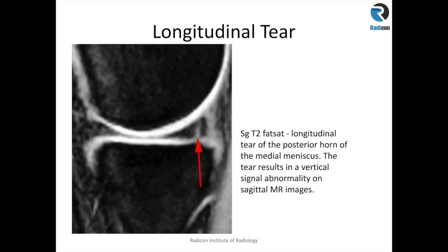This is an example of a longitudinal tear where the red arrow shows signal change which reaches the undersurface of the meniscus. The appearances are suggestive of an undersurface longitudinal tear, and this is at the periphery, so it can heal by itself as there is peripheral vascular blood supply to the menisci.